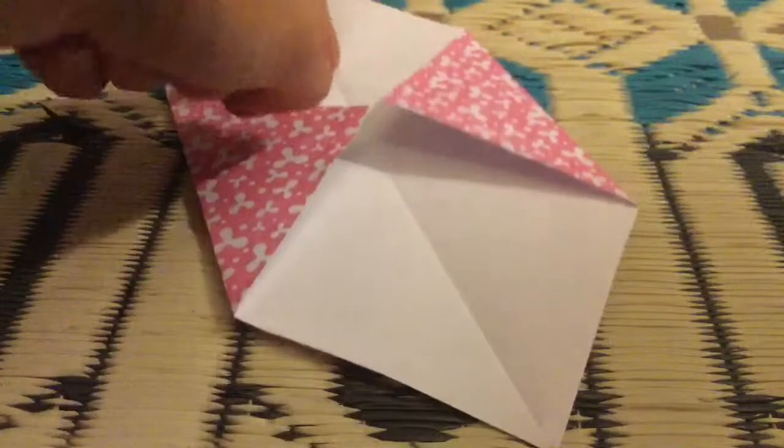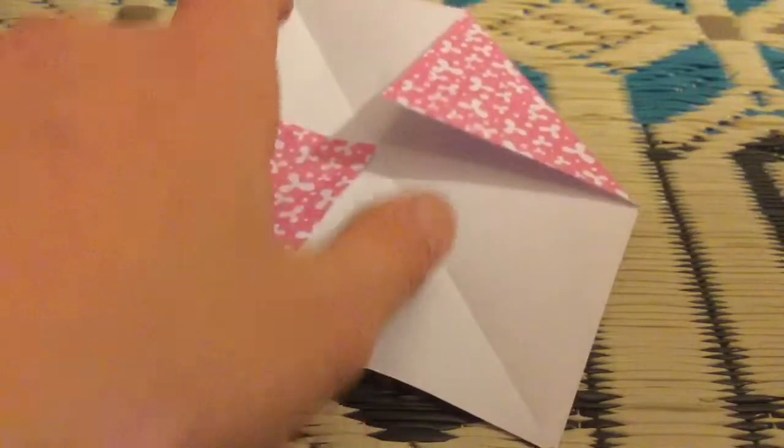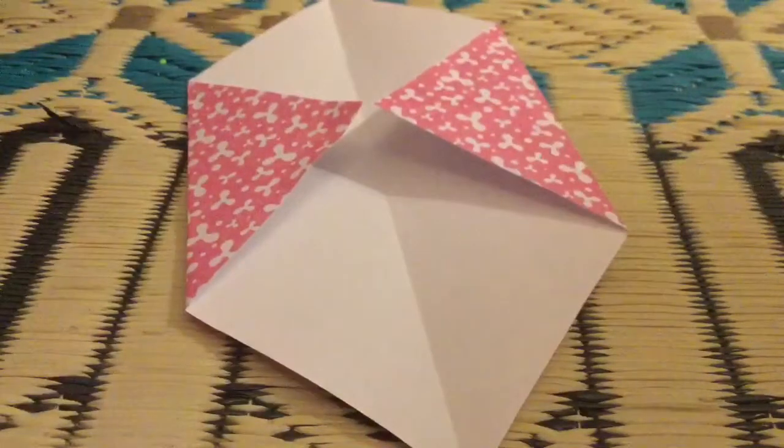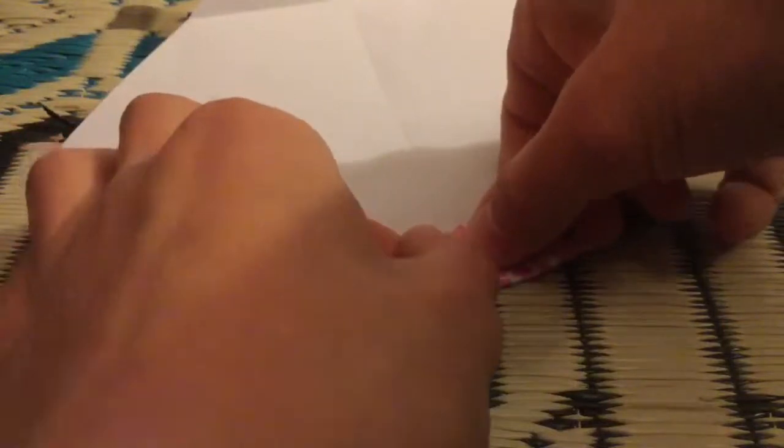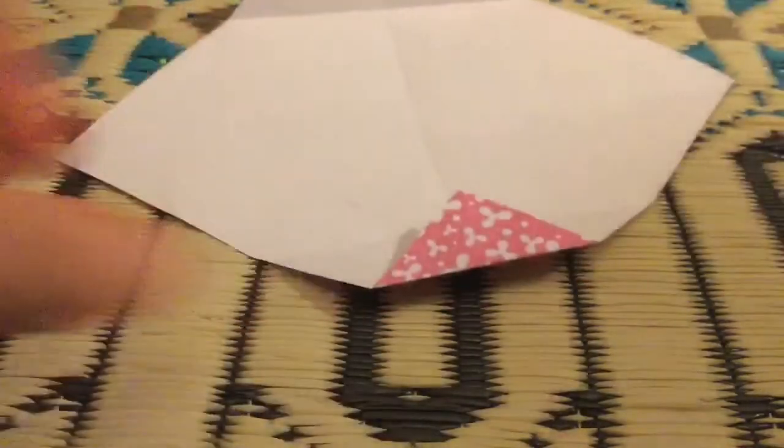Now you have some type of square isosceles right triangle thing. But you're going to unfold that, and take the corner right here, and fold it to that crease you just made, so it will look like that.